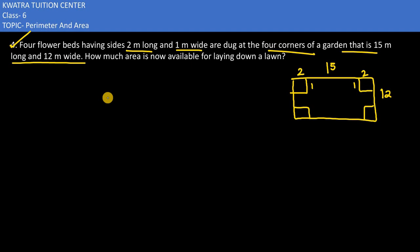So this is our approach. The whole rectangle should be taken and then we would be removing these four rectangles which are used as flower beds.